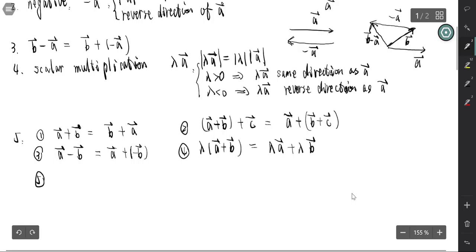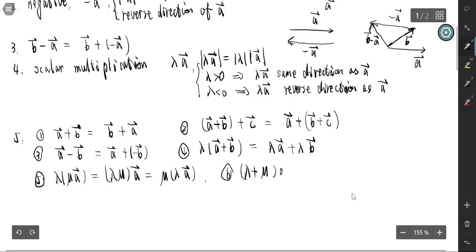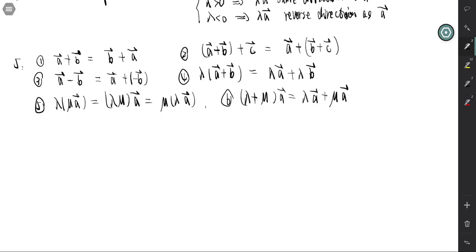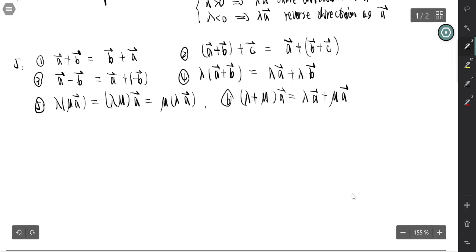The fifth rule is lambda A times mu A equals lambda times mu times A — we can exchange lambda and mu. The sixth is (lambda plus mu) times A equals lambda A plus mu A. Those are the rules of addition and scalar multiplication. We can derive these rules directly from the definitions of addition and scalar multiplication.